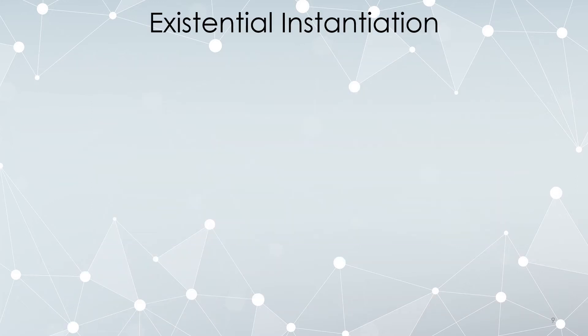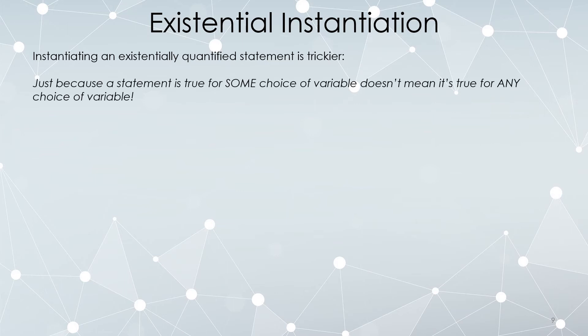Now let's talk about the flip side, existential instantiation. Instantiating existentially quantified statements is a bit trickier compared to the universal ones. Just because a statement is true for some choice, there exists a choice for which the statement is true, does not mean it's true for any choice.